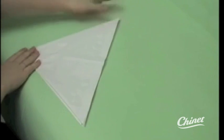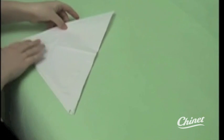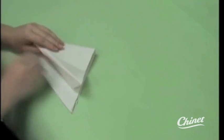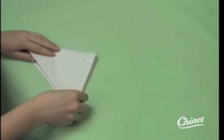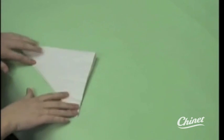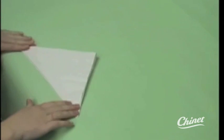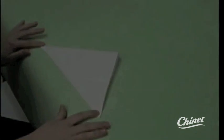Now fold the napkin once more down the center to create an even smaller triangle. Place this fold to the side for now.